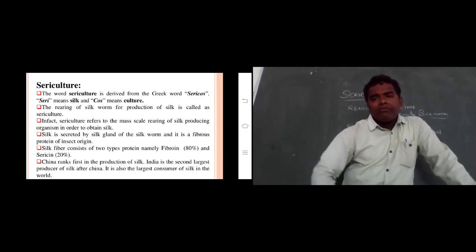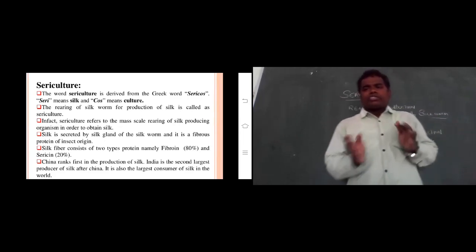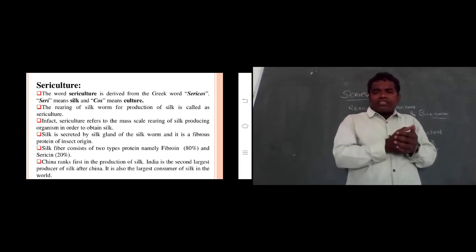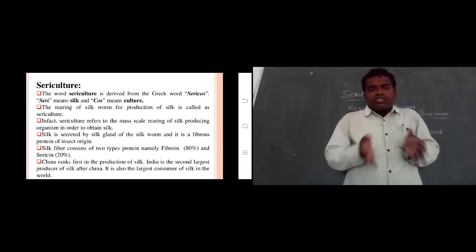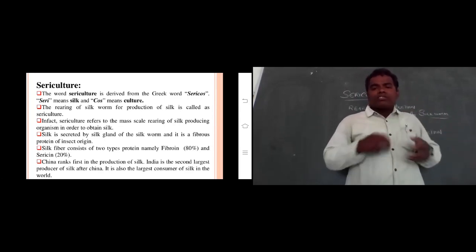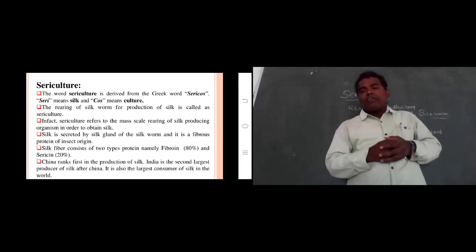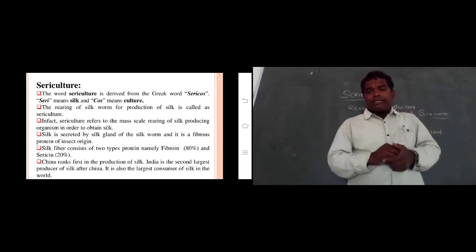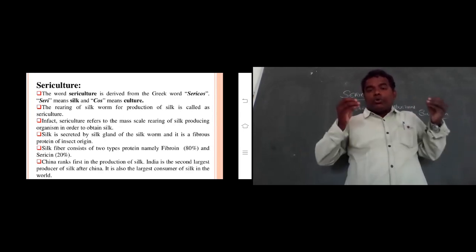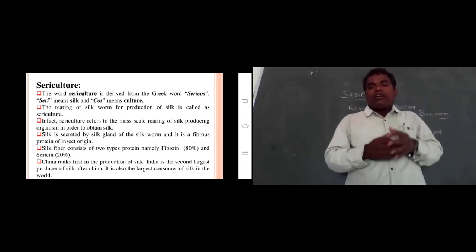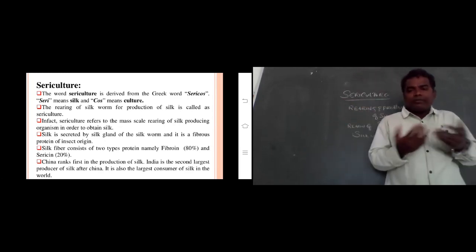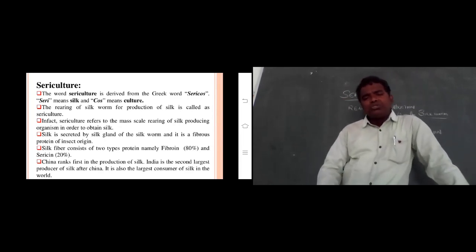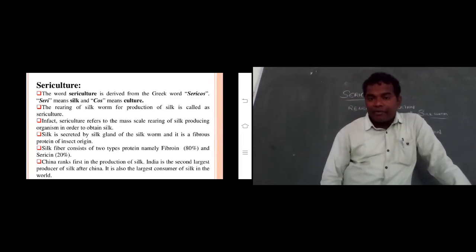Worldwide, China is the first rank in production of silk. India is the second largest producer of silk after China. Within India, the first place in silk production is Karnataka. India is also the largest consumer of silk in the world.